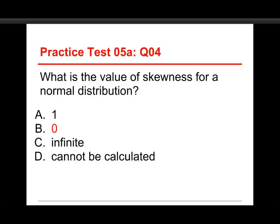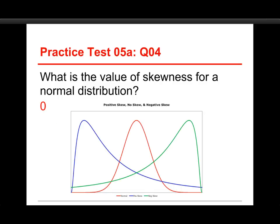The answer is 0. Let's take a quick look. We've seen this chart before. Right there in the red is the bell curve. That's the normal distribution. And it has no skewness.